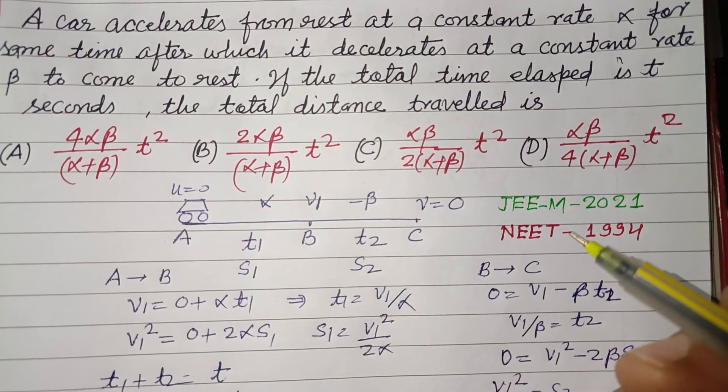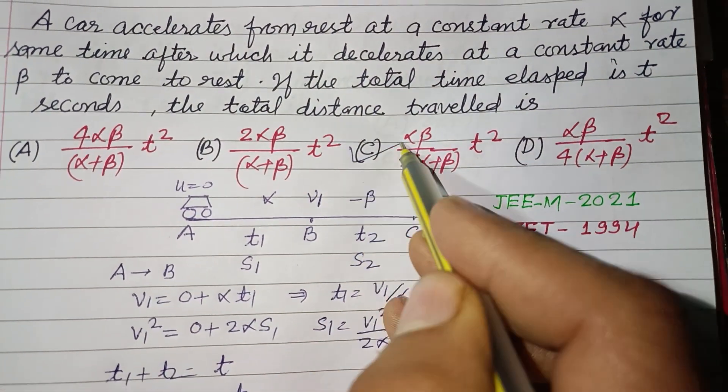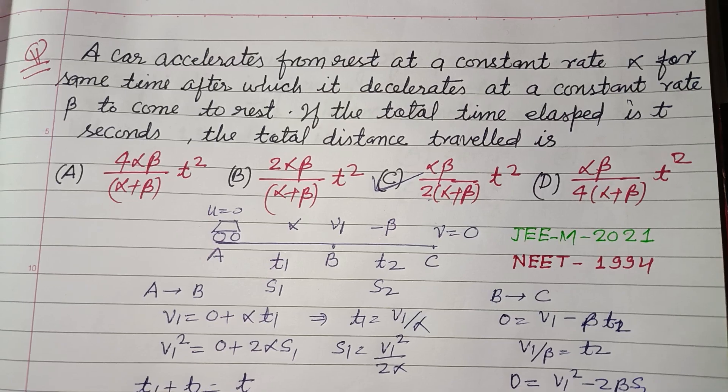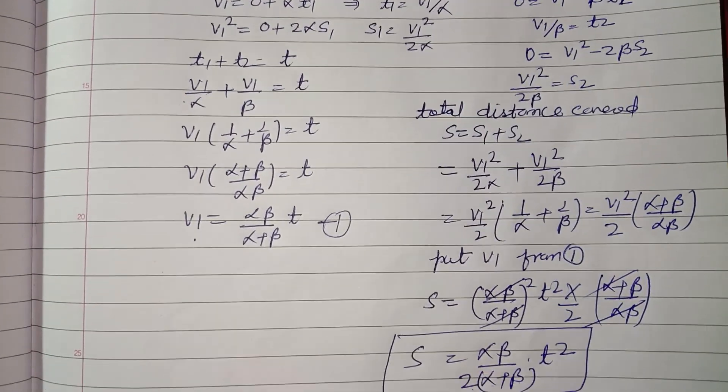Which is given in option C: αβt²/[2(α + β)]. C is the correct answer to this question. I hope you got it. Please like the video, subscribe to the channel. Thanks for watching.